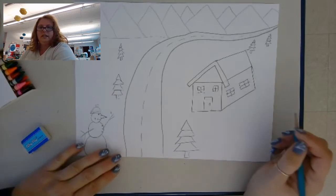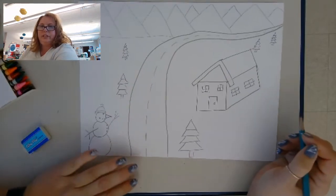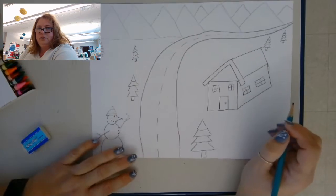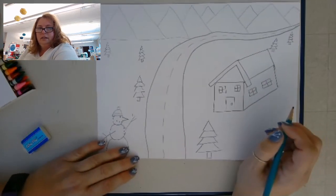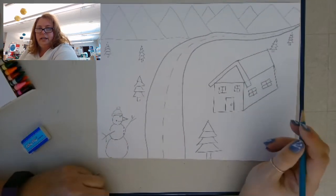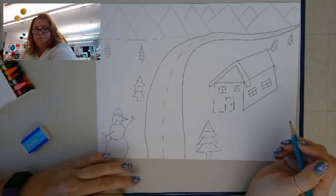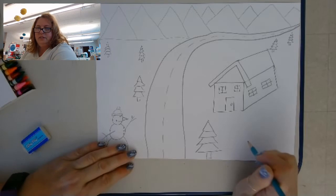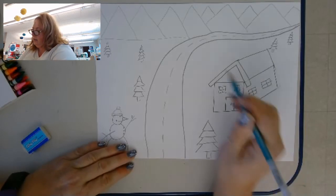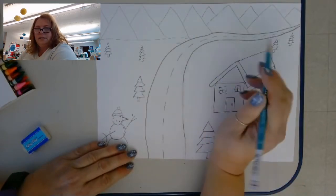And then you can add anything else you want to your picture. You can add more trees, you can add another snowman, anything you would see in the winter. You can add an animal if you want to. Just remember, if it's close, it's bigger. If it's far away, it's small.